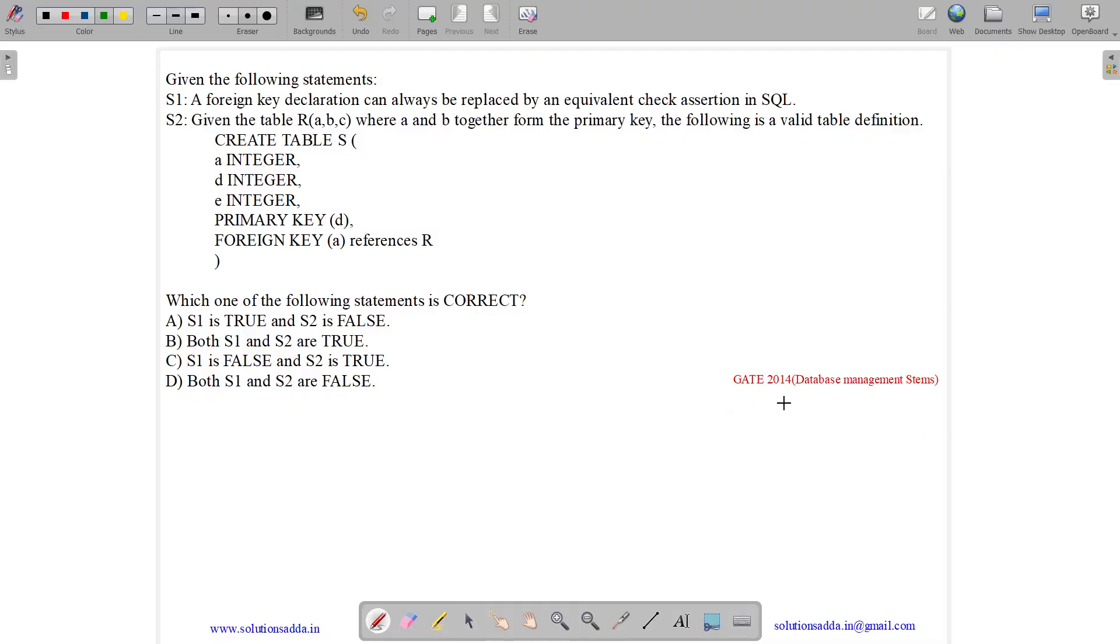This question belongs to Database Management System subject and was asked in GATE CSE 2014 set 1. The question states, given the following statements, S1: a foreign key declaration can always be replaced by an equivalent check assertion in SQL. We need to test whether it is true or false.